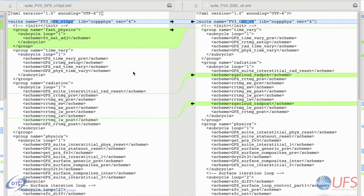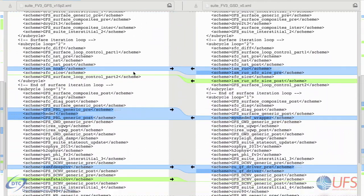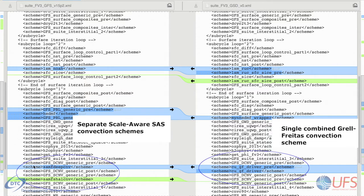Another real-world example is convection, where it might be suitable to group shallow, congestive, and deep convection into one scheme if they should always be called together, or as separate schemes if they can act independently. Looking at the difference between two suite definition files, one that uses separate shallow and deep versions of the SAS scheme on the left, and one that uses one combined Grell-Freitas convection scheme on the right, demonstrates this concept.